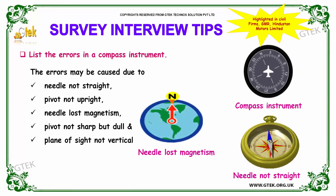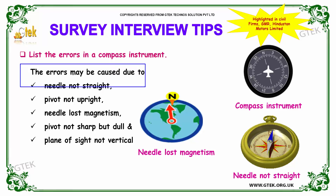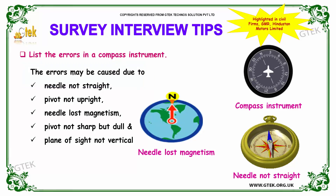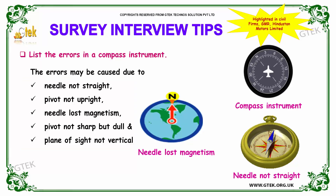Our next question is: list the errors in a compass instrument. Errors may be caused due to the following reasons: the needle is not straight, the pivot is not upright, the needle might have lost its magnetism, in certain cases the pivot will be dull and not sharp, and the plane of sight is not vertical. These are the errors that can occur in a compass instrument.